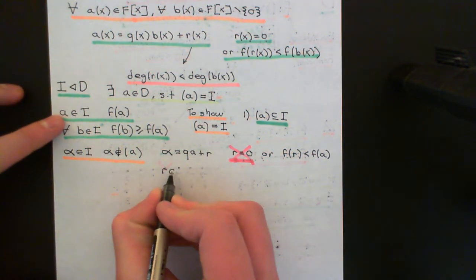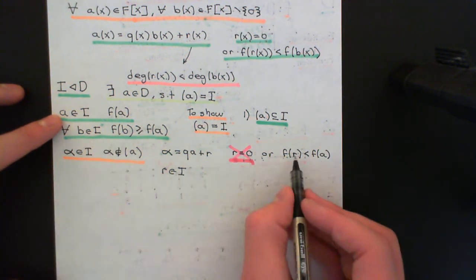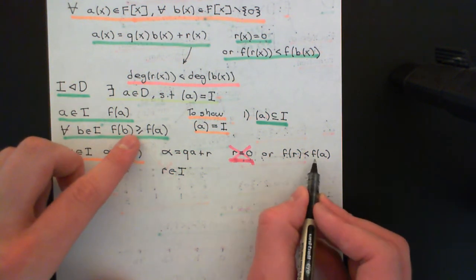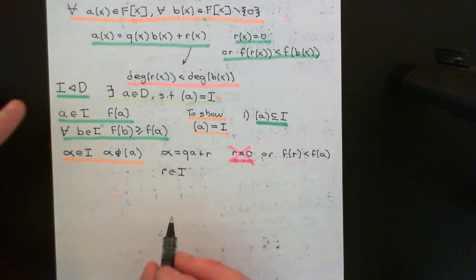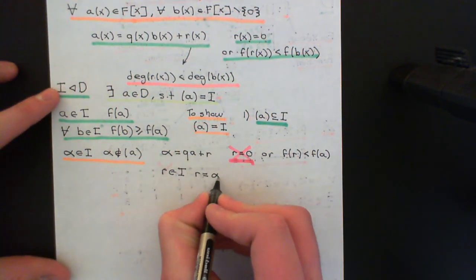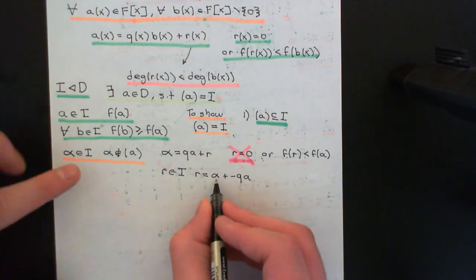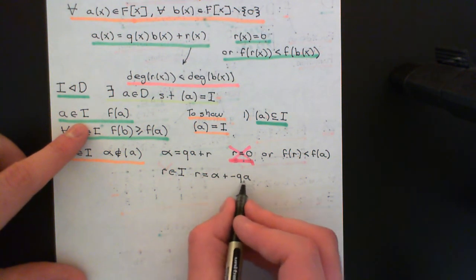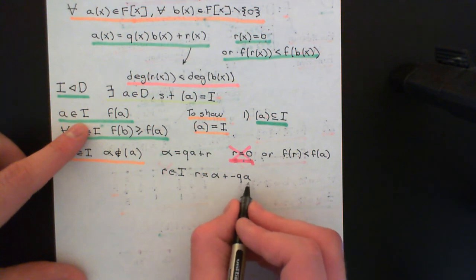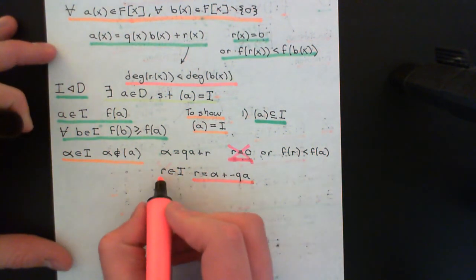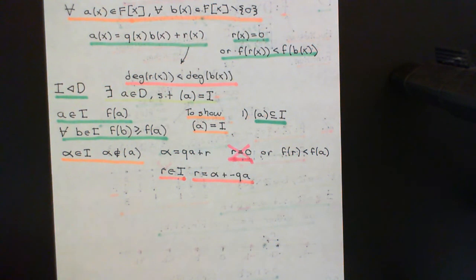I claim that R is going to be in the ideal capital I, and that would contradict the statement that all elements of the ideal have Euclidean size greater than or equal to F of A, because now we've found one with Euclidean size strictly less than F of A. We can conclude R is in the ideal because R equals alpha plus the additive inverse of Q times A. Alpha is in the ideal, A is in the ideal so Q times A is in the ideal, its additive inverse is in the ideal, and their sum is in the ideal. So R is in the ideal — contradiction.